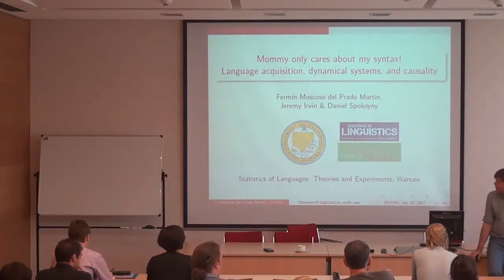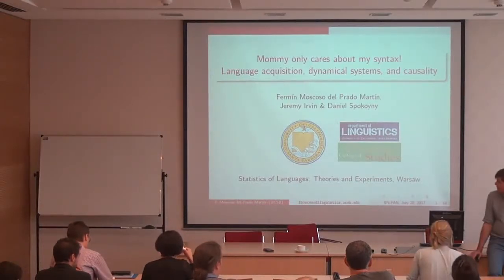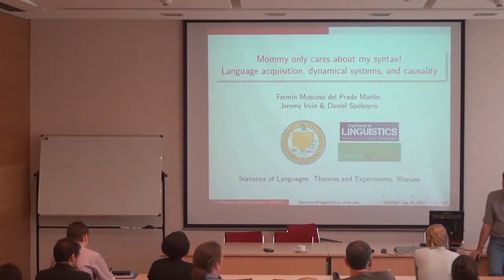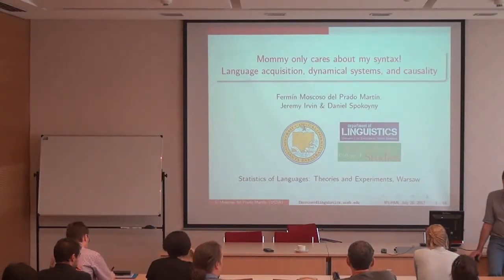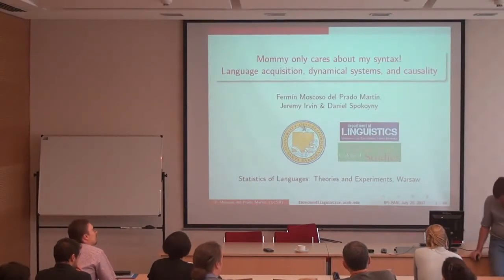This is joint work with two amazing — actually that's an understatement — undergraduate students of mine: Jeremy Irvin, who is now a master's student at Stanford Computer Science, and Daniel Spokoni, who is going on to the PhD program in computer science at Carnegie Mellon. These guys were responsible for doing a lot of the calculations in this work and were very important contributors.